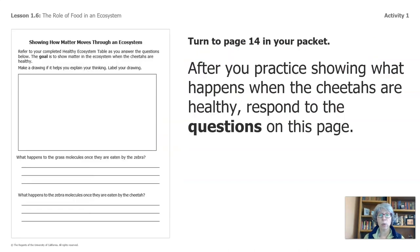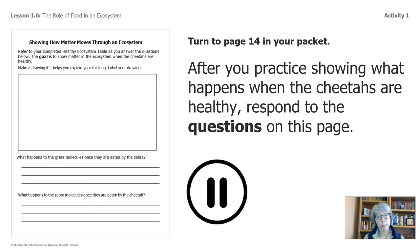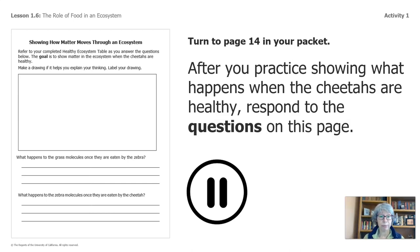When you're done with that, we'll turn to page 14 in your packet. After you practice showing what happens when the cheetahs are healthy, respond to the questions below. Make sure you pause the video so you can look through this sheet. Refer to your completed healthy ecosystem table as you answer the questions. The goal is to show matter in the ecosystem when the cheetahs are healthy. Make a drawing if it helps you explain your thinking, and label your drawing. I recommend that you always draw before you write — it's super helpful. See you in a bit.